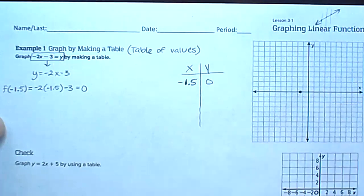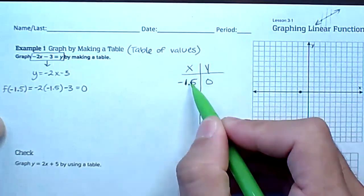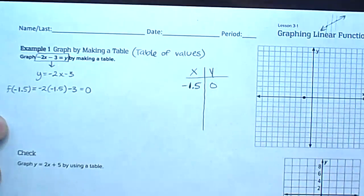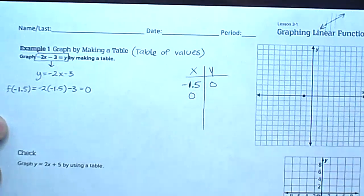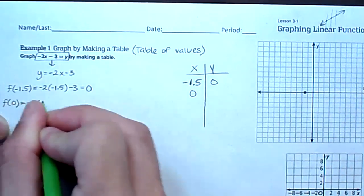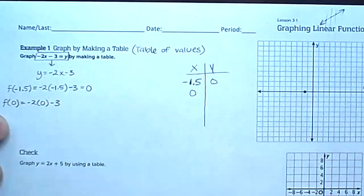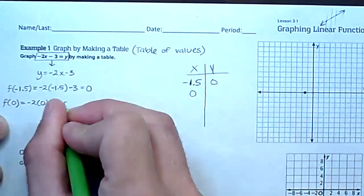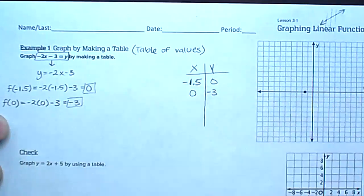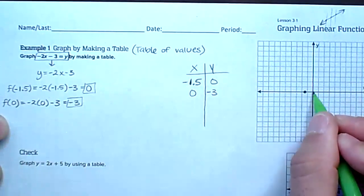Let's get out of decimals and work with easy numbers. One of the easiest numbers to work with is 0. f(0) means negative 2 times 0, which is nothing, minus 3 gives us negative 3. So our output is negative 3. At x = 0, we go down 3 on the y-axis — that point is 0 comma negative 3.